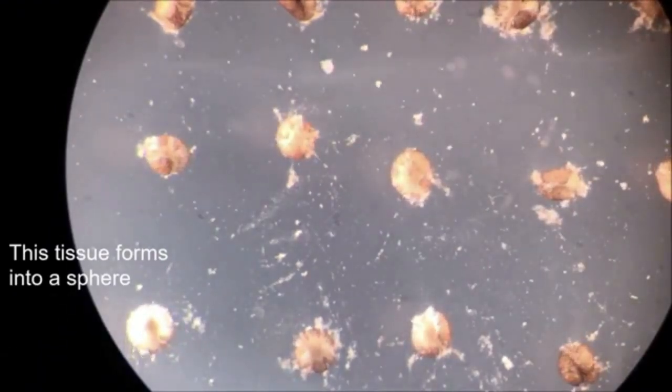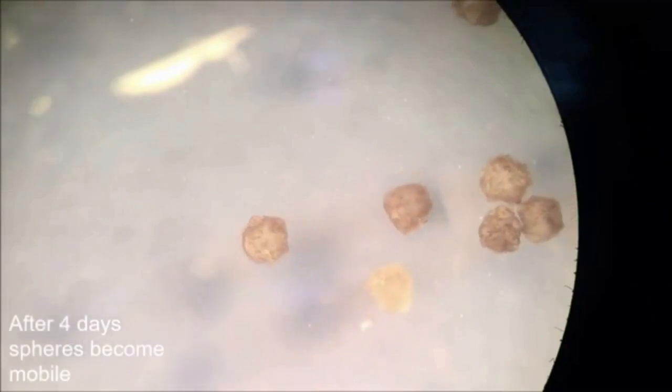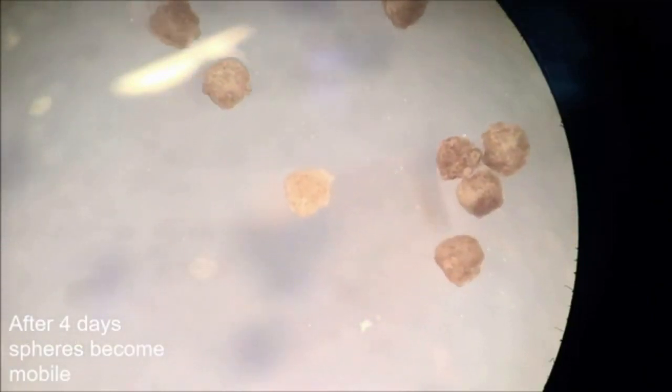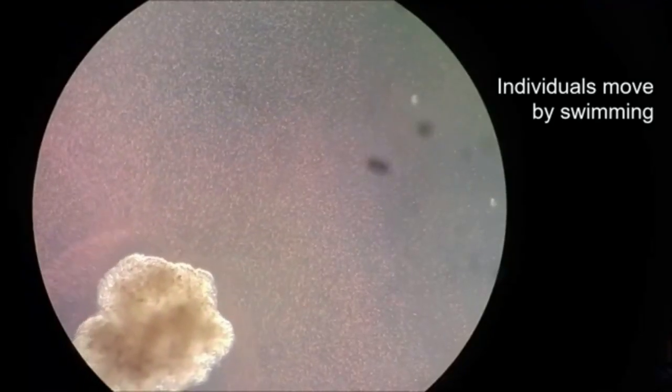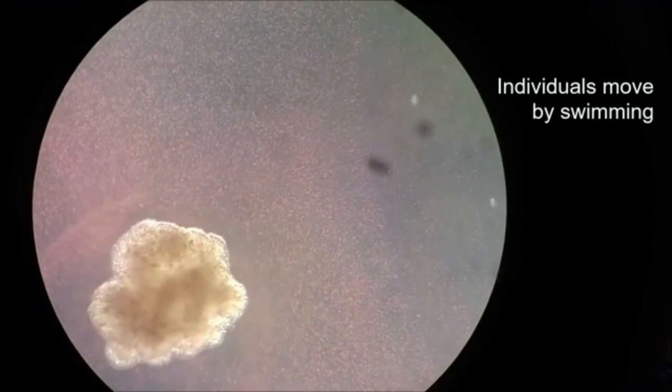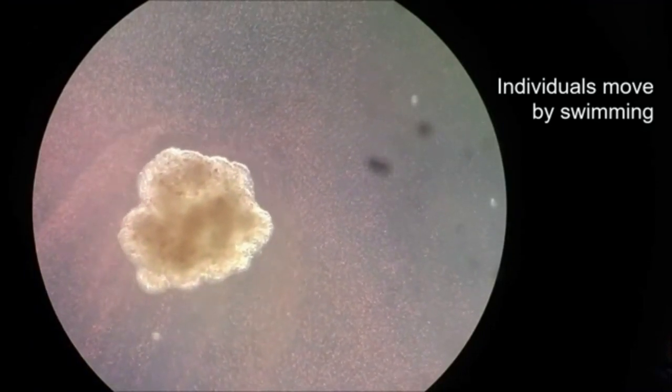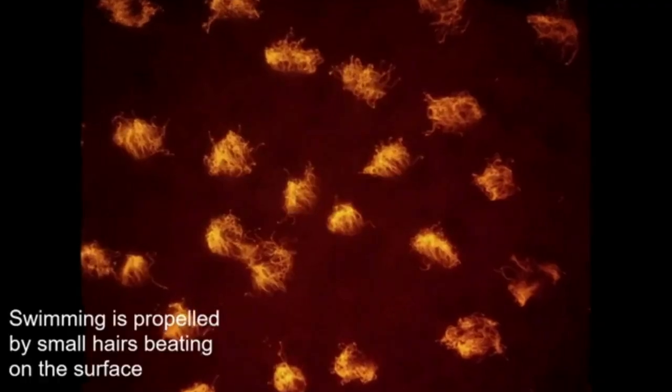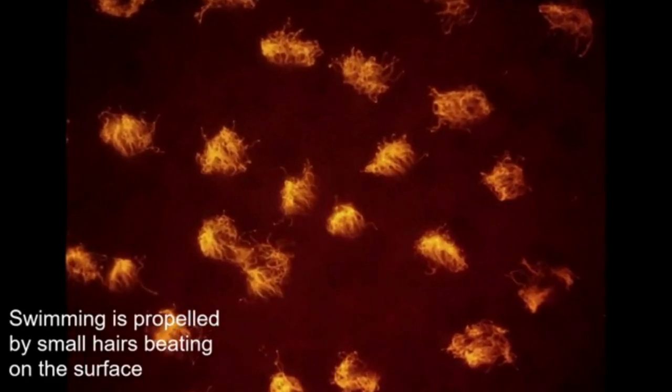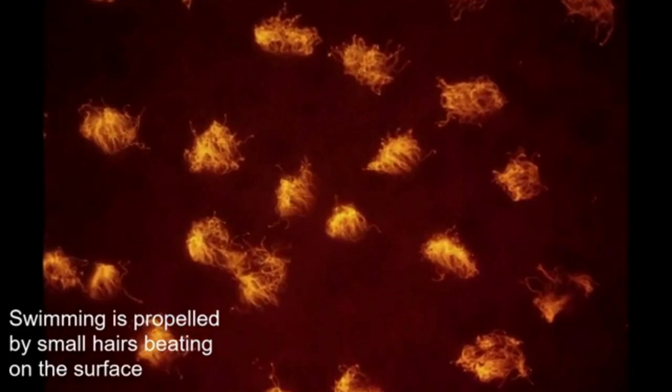It turns out the new xenobots are much faster and better at tasks such as garbage collection than last year's model, working together in a swarm to sweep through a petri dish and gather larger piles of iron oxide particles. They can also cover large flat surfaces or travel through narrow capillaries. These studies also suggest that the in-silico simulations could, in the future, optimize additional features of biological bots for more complex behaviors.